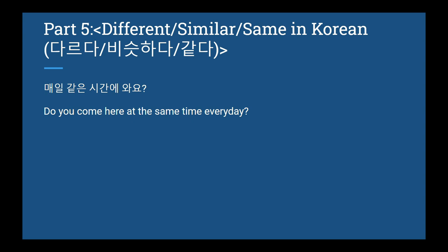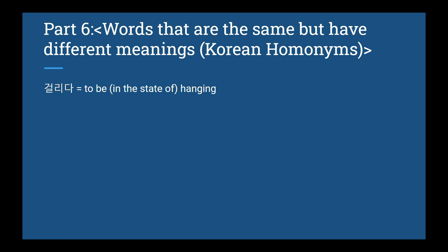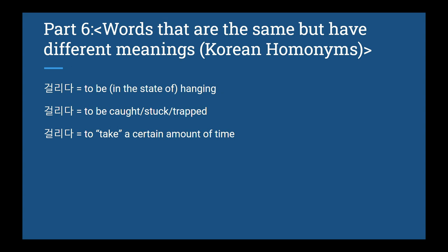Alright, part 6 — Korean homonyms. There's a bunch of these in Korean. 쓰다, even though it's written the same way for all of these, can mean to write, to use, and to wear a hat. They all sound the same but are completely different words. Another example is 걸리다 — it can mean to be in a state of hanging, to be caught, to be trapped, to take a certain amount of time, and to catch a cold: 감기에 걸렸어요. To see examples of these, check the lesson online.